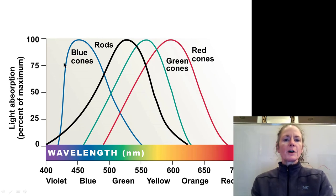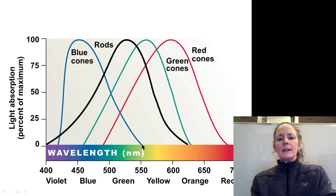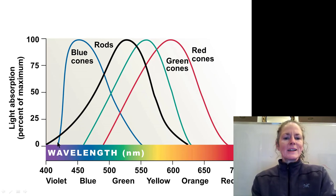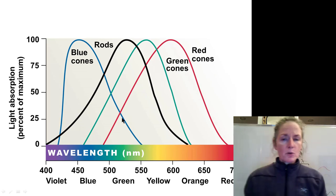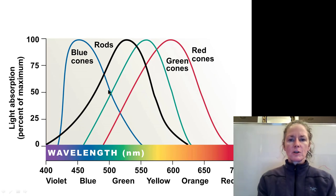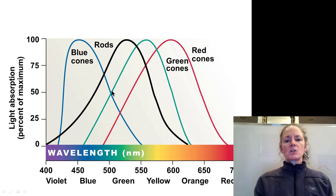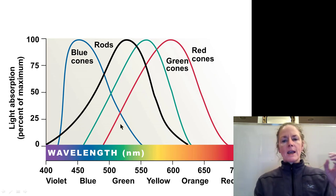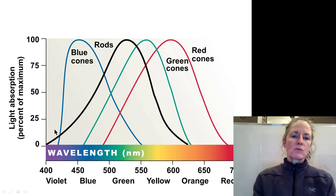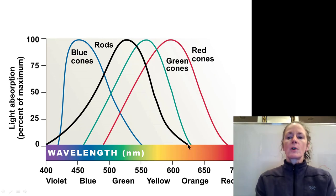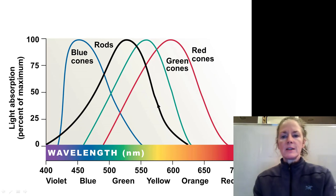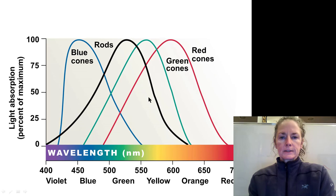Our blue cones are sensitive from about the end of the green band all the way down to the very end of the violet band. By combining the inputs from these different photoreceptors, we can tweak the red, green, and blue channels to derive what color we're seeing. Some stimulation on blue, some on green, and some on red, and we can determine the color. Rods are sensitive across a variety of wavelengths — from about 400 nanometers up to about 630 nanometers — so rods can detect photons of light regardless of color.